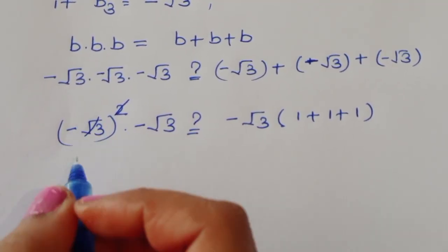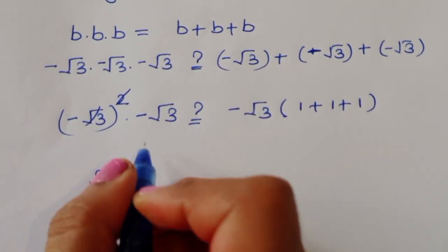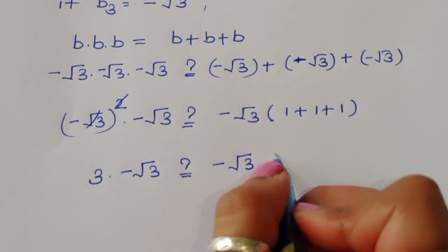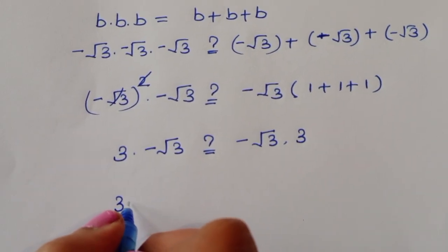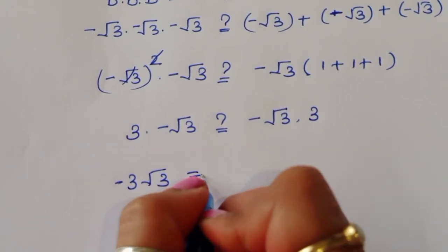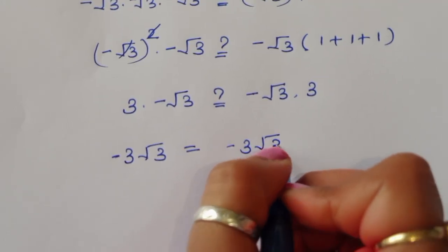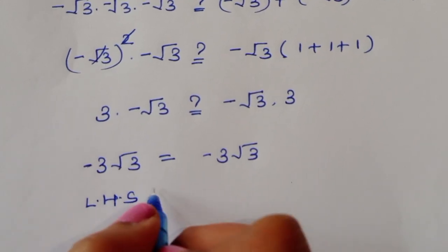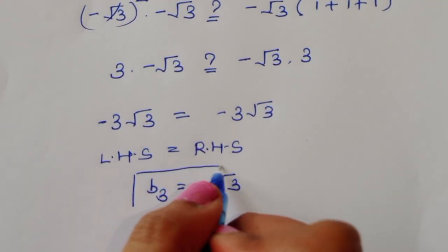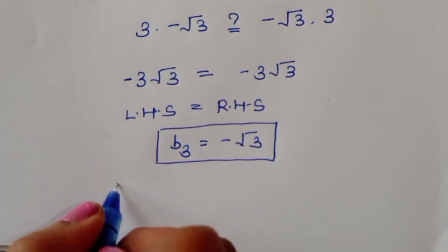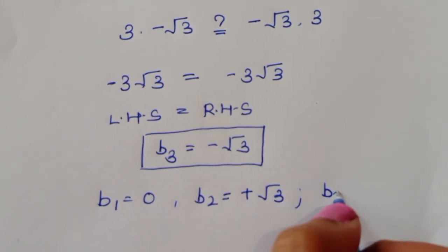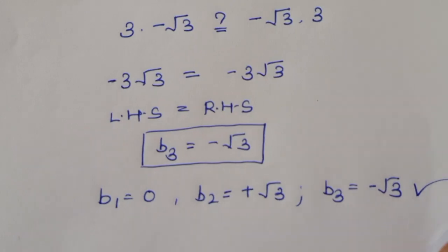The square cancels with the square root on the left, giving 3 times minus square root of 3, which is minus 3 square root of 3. The right side is minus square root of 3 times 3, also minus 3 square root of 3. LHS equals RHS, so b3 equal to minus square root of 3 is also a correct solution. Therefore all three values — b1 equal to 0, b2 equal to plus square root of 3, and b3 equal to minus square root of 3 — are correct solutions for this equation.